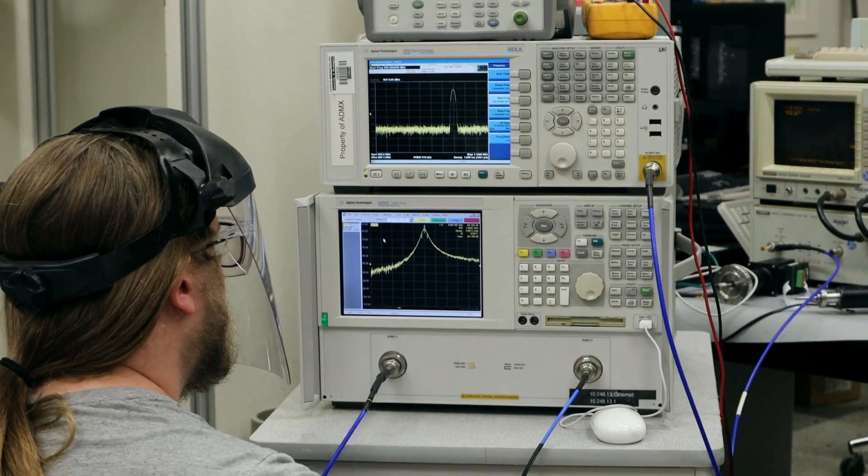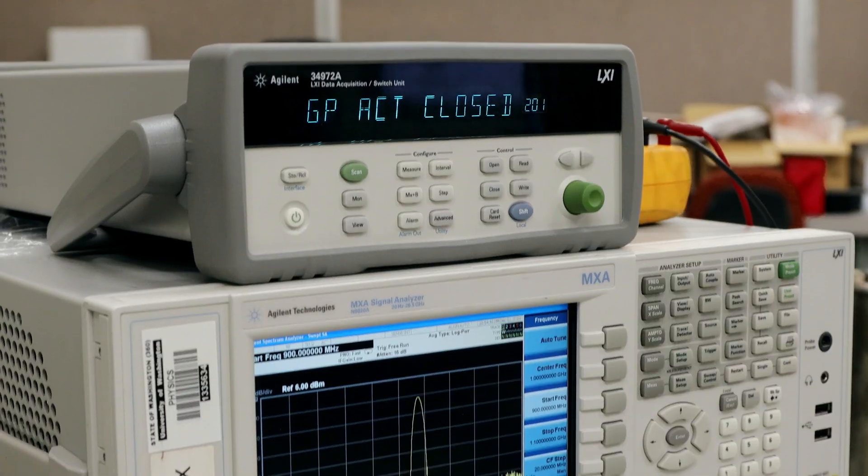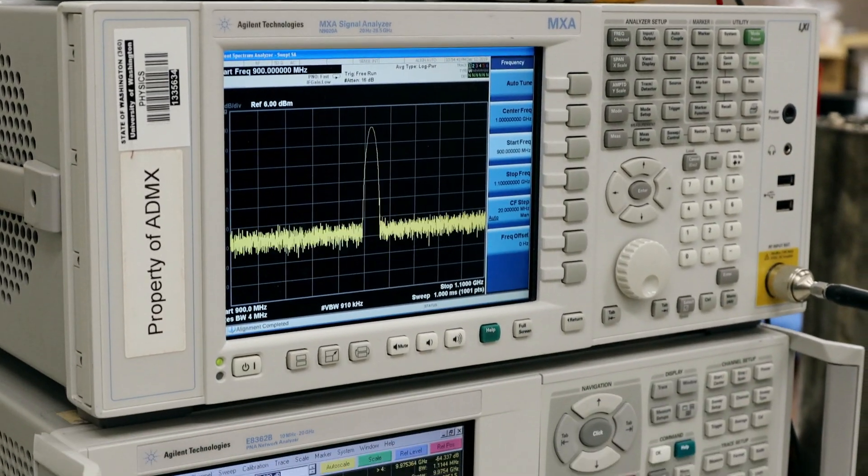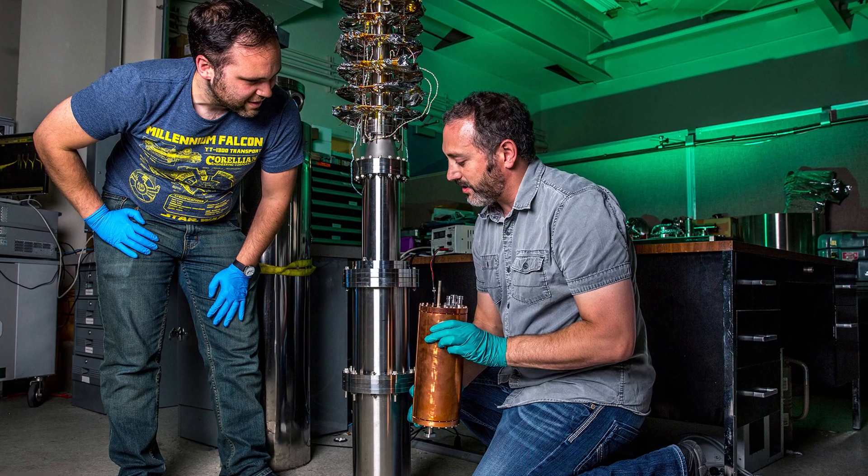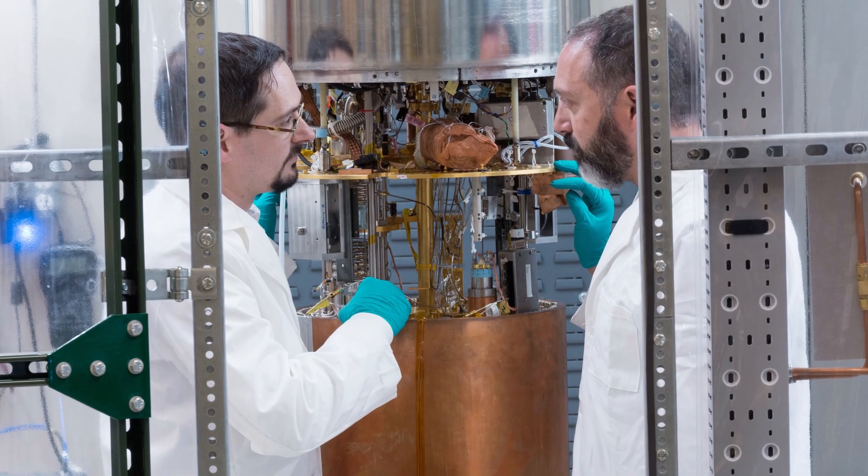We're looking for tiny amounts of power, like 10 to the minus 24 watts. So tens to hundreds of photons every second. We need to use quantum electronics to be able to boost that into a detectable range. And then at that point it's basically an AM radio. You're turning the dial, looking for small tones, small excess of power above the background noise.